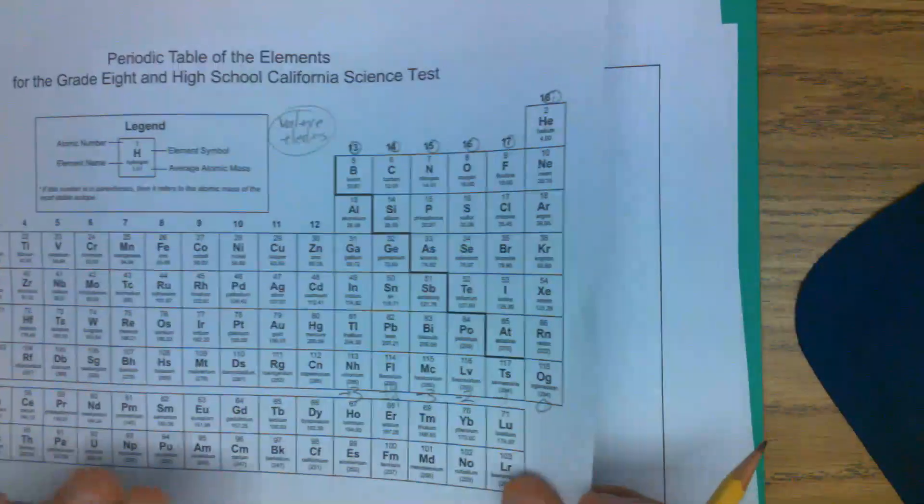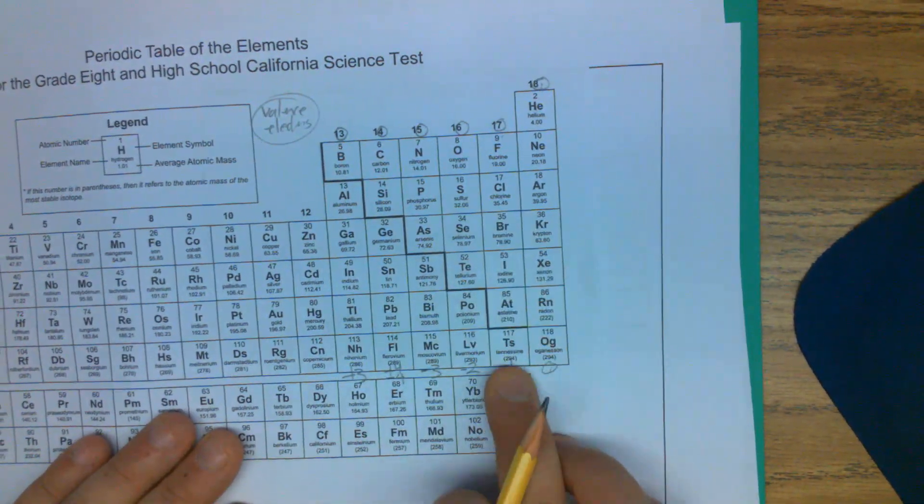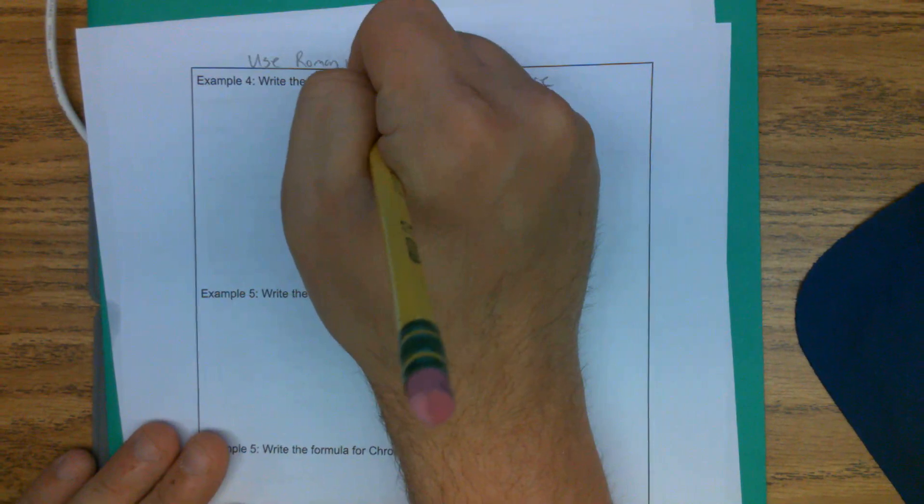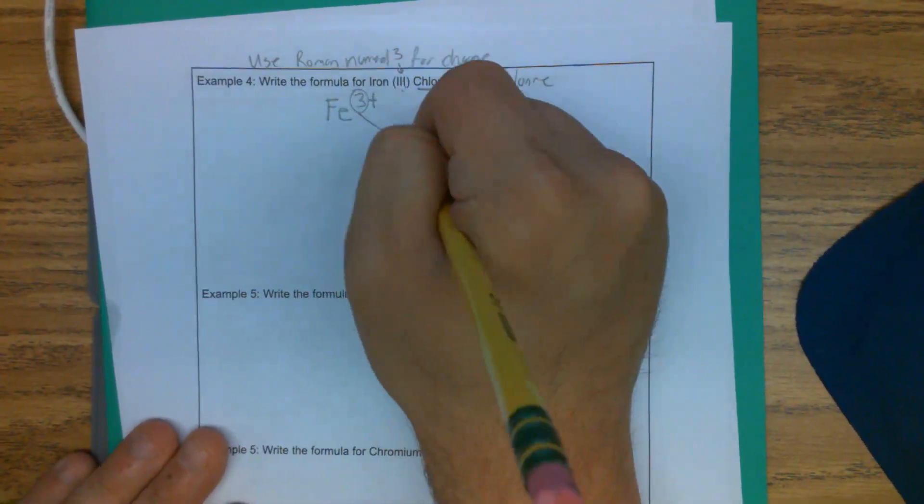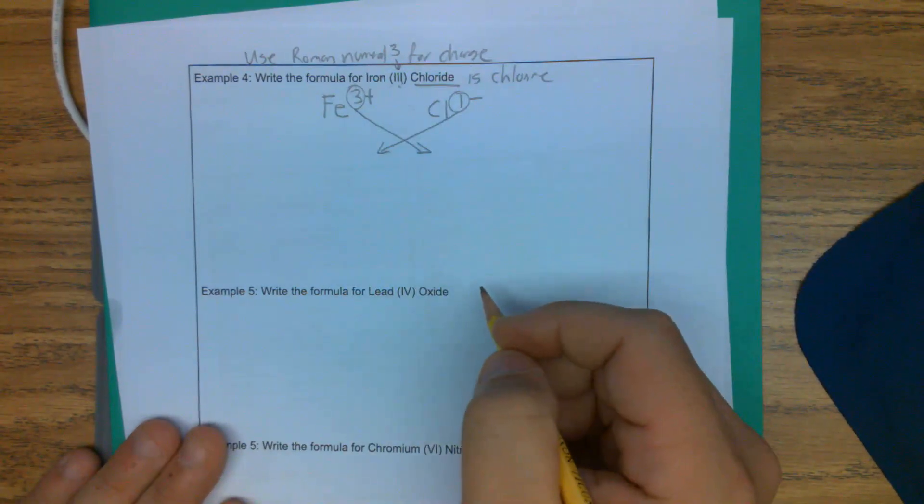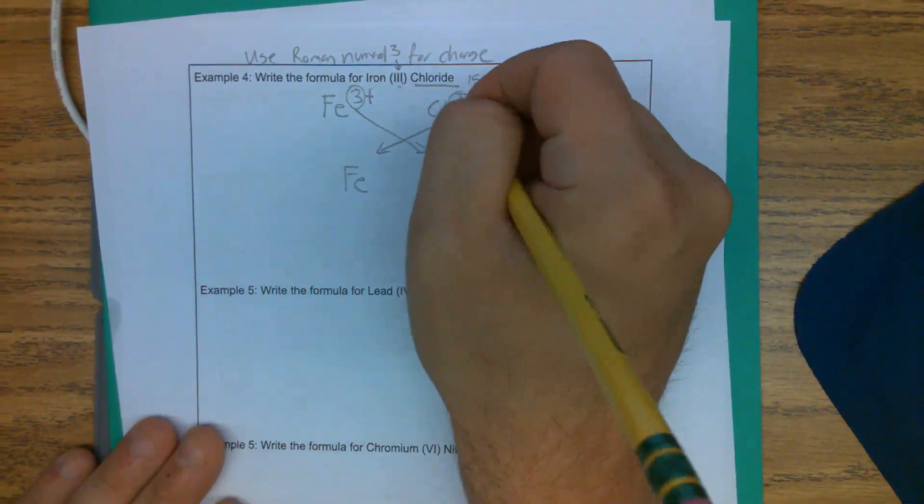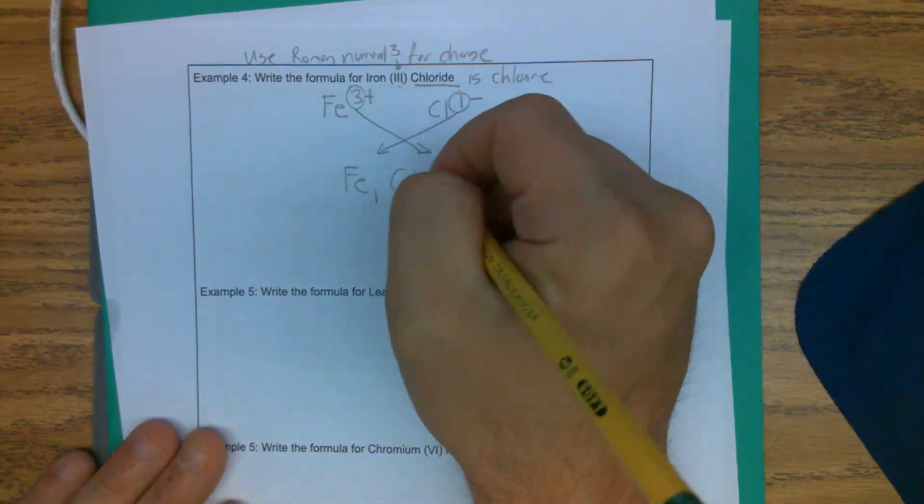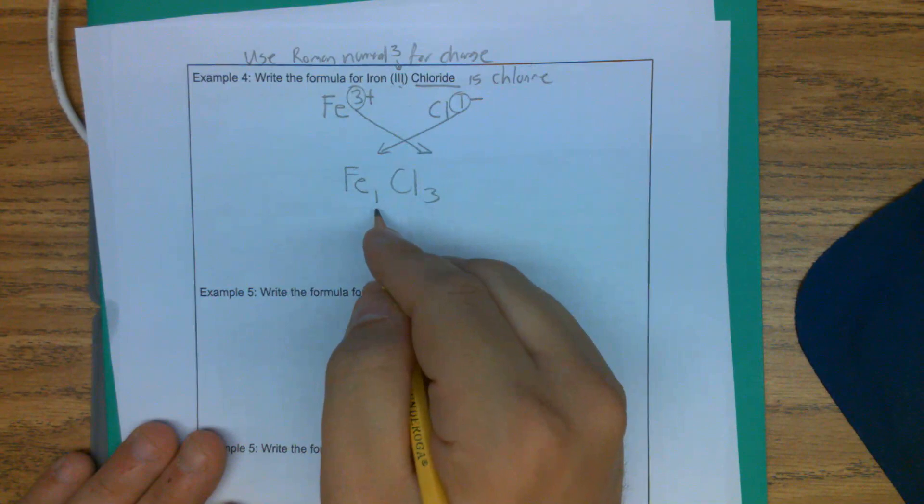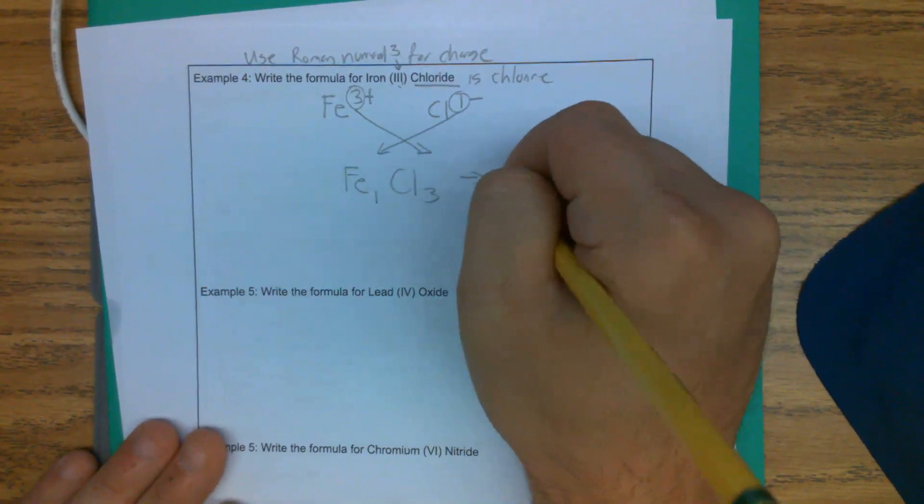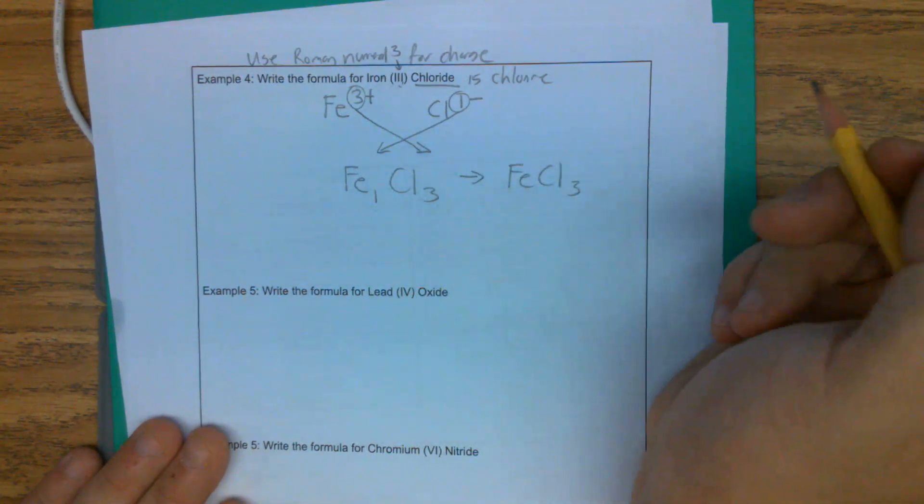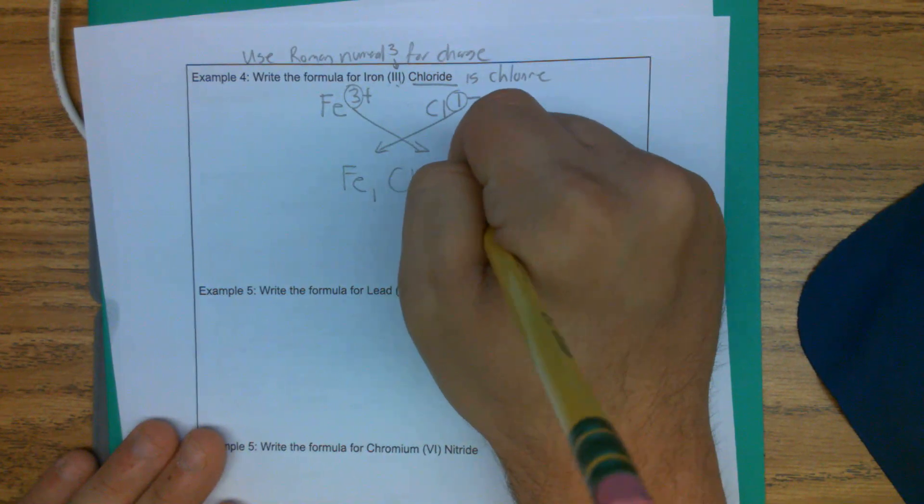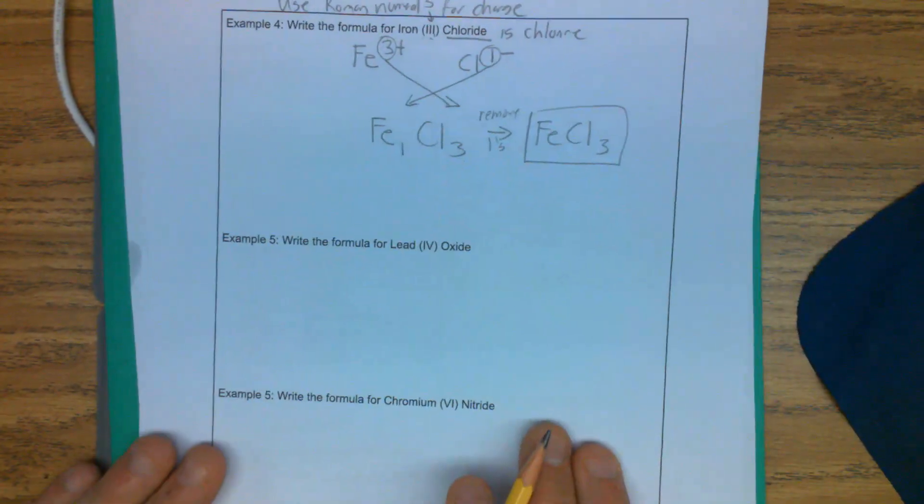All right. Chloride CL is going to be, again, minus one. So we're going to say that CL is going to be one minus. All right. I'm going to circle these, switch these around. And then we're just doing the same thing that we did before. FE, the one comes down here. CL, the three comes down here. So we get FE1, CL3, or FE, CL3. So when we remove ones.